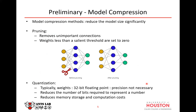One method to overcome this is model compression, which significantly reduces model size. The main commonly used methods are pruning and quantization. Pruning removes unimportant connections — weights below a salience or importance threshold are set to zero — resulting in a smaller version of the original model. Quantization reduces the precision of variables; for example, weights usually represented in 32-bit floating point can have their bit-width reduced, which decreases memory storage and computation costs.